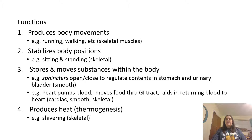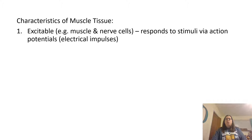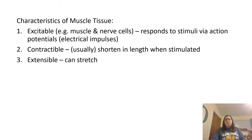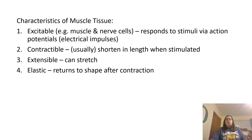Characteristics of muscle tissue: they are excitable — muscle and nerve cells respond to stimuli and create action potentials, which are electrical impulses. They are also contractile, meaning they usually shorten in length when stimulated. They are extensible, meaning they can be stretched. And they are elastic, returning to their normal shape after they contract.